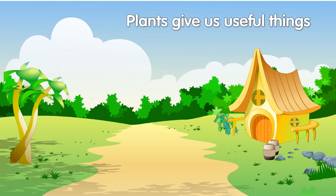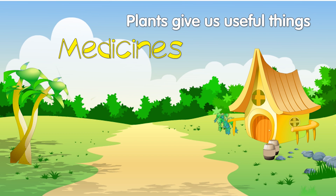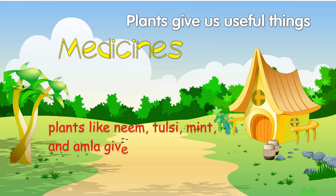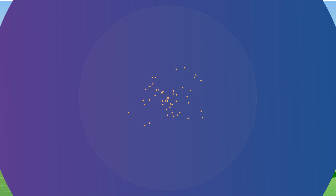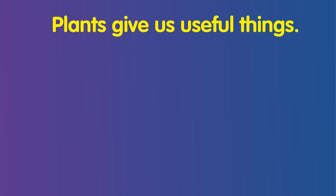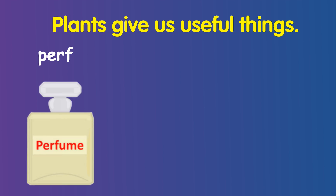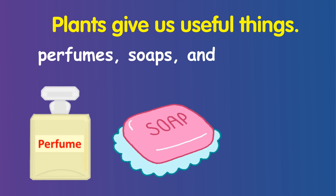Plants give us useful things like medicine. Plants like neem, tulsi, mint and amla give us medicines. These plants are called medicinal plants. Plants also give us useful things like perfume, soaps and toothpaste.